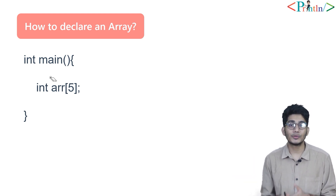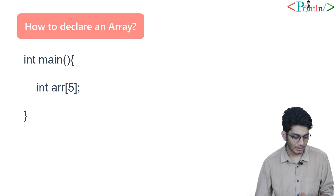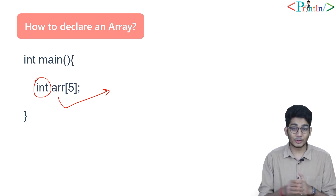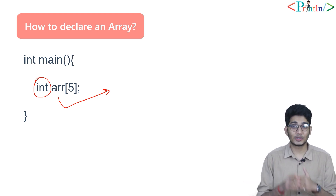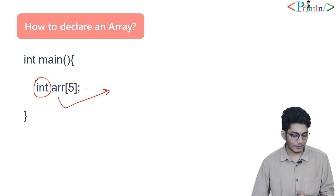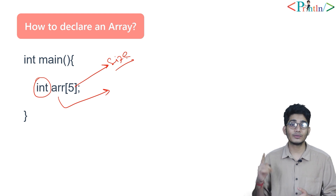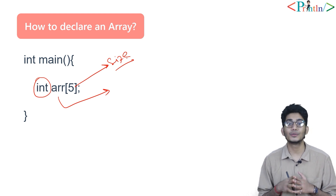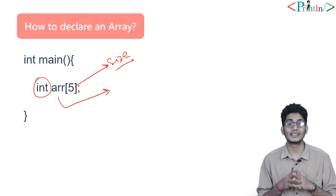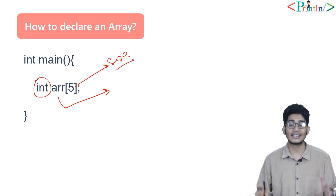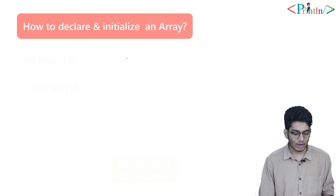To declare an array, first you have to declare a data type — the data type here is int. Then you have to give it a name: it could be 'arr', 'array', 'str', or anything. Then you have to mention the size. So the three steps are: declare the data type, put the name, and put the size. That's how you declare an array.